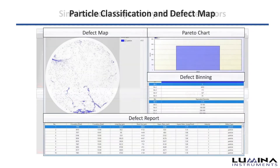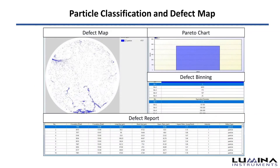These images are automatically classified and presented on interactive defect maps. The system also provides a Pareto chart, defect binning, and a defect report.